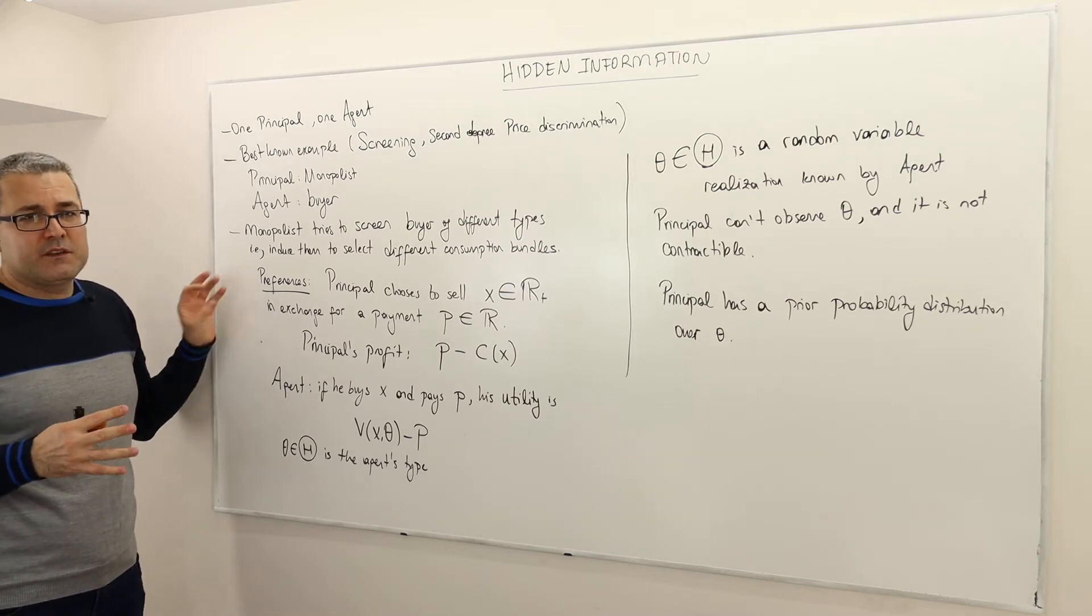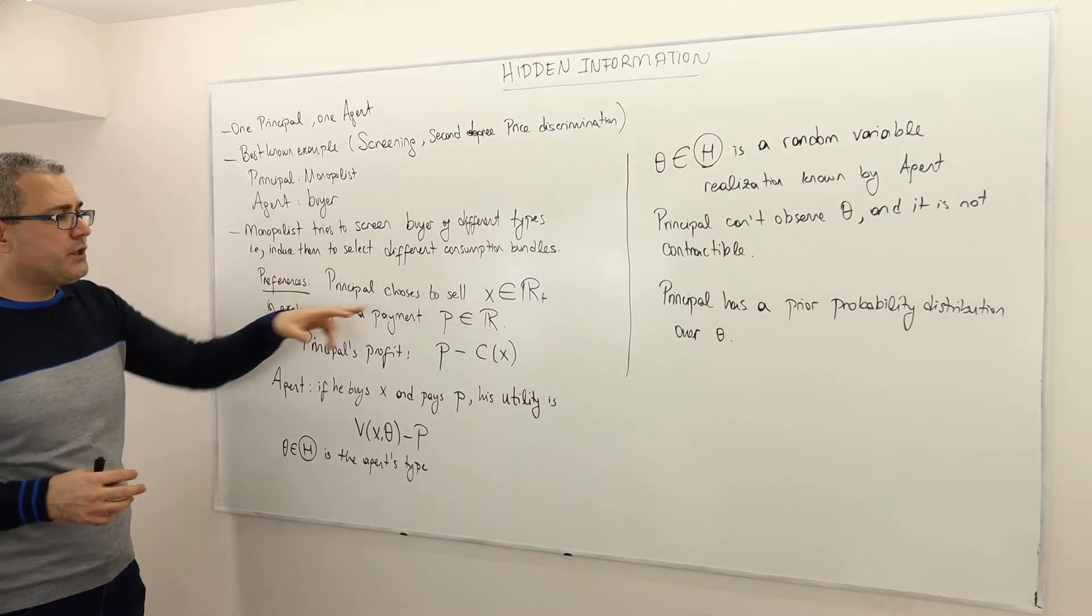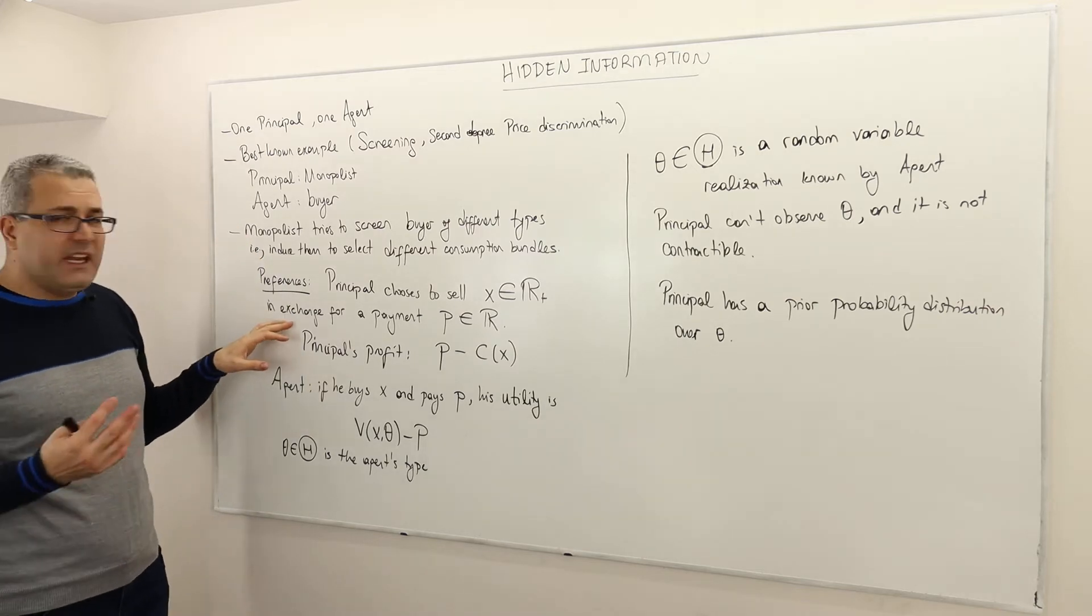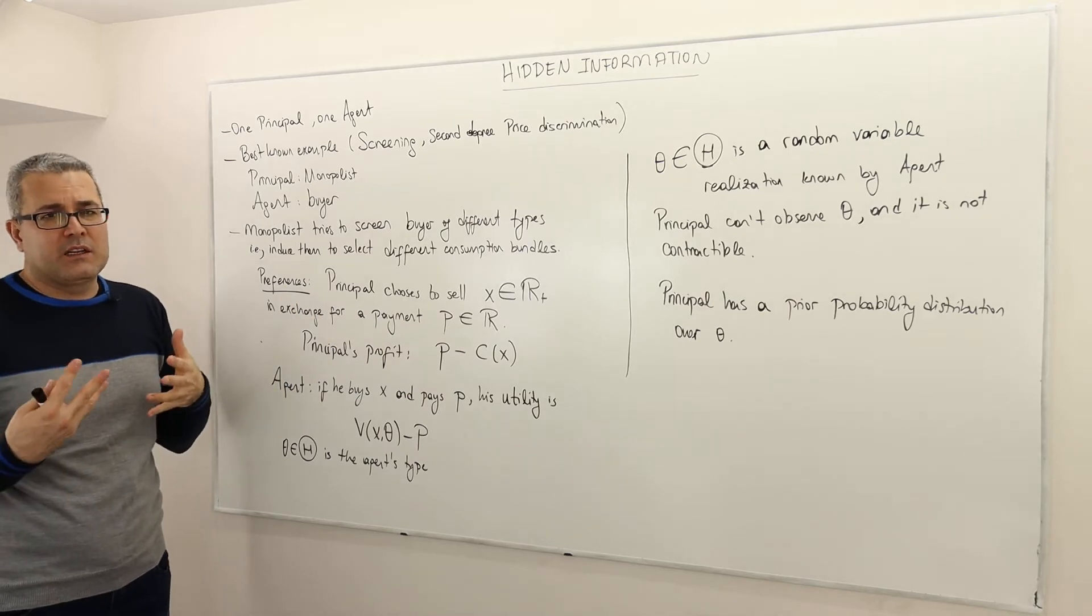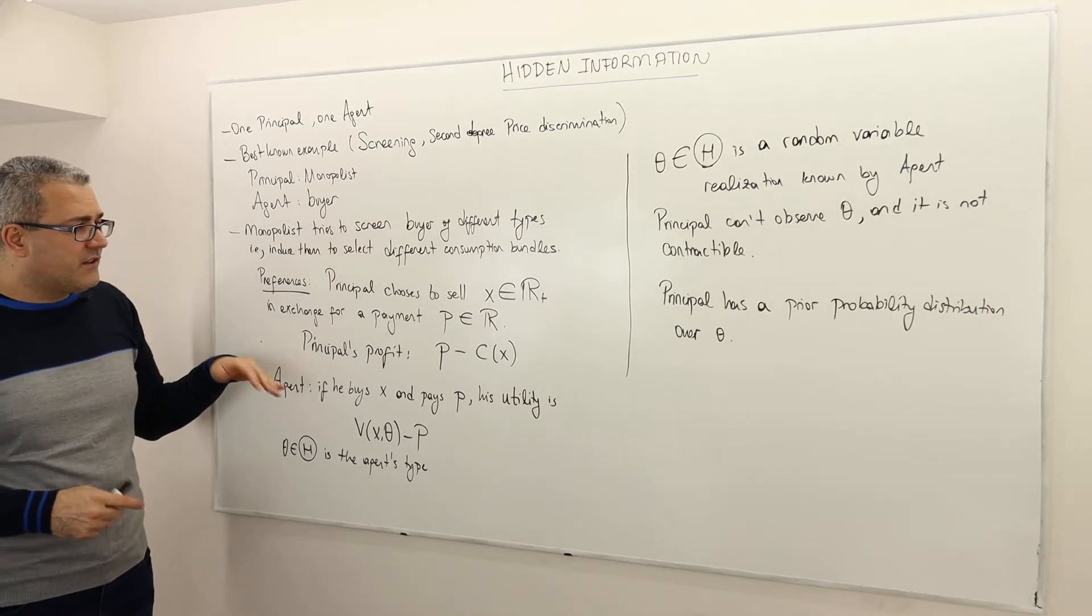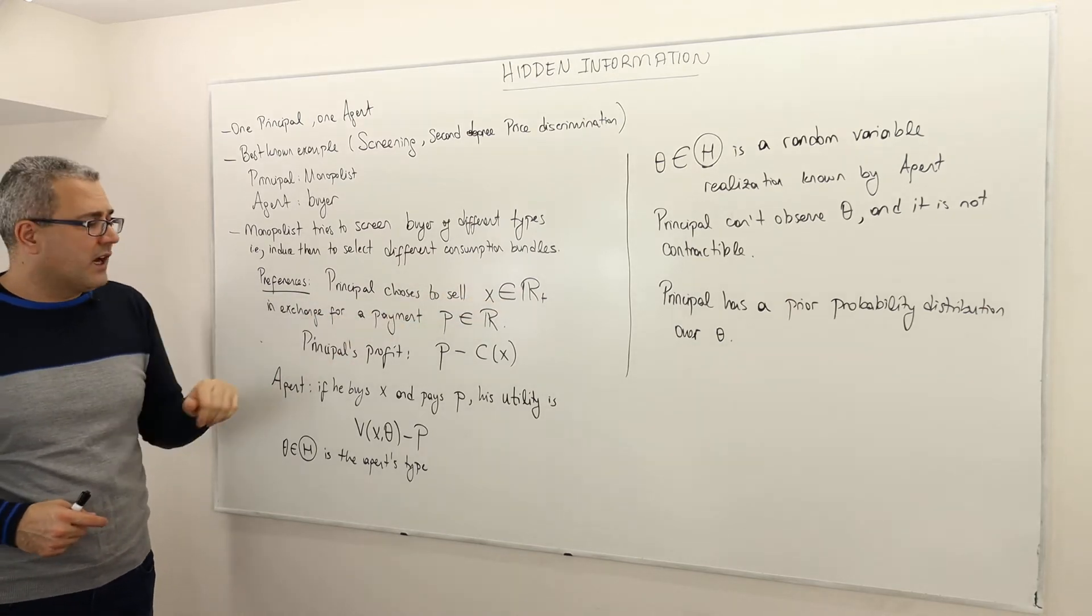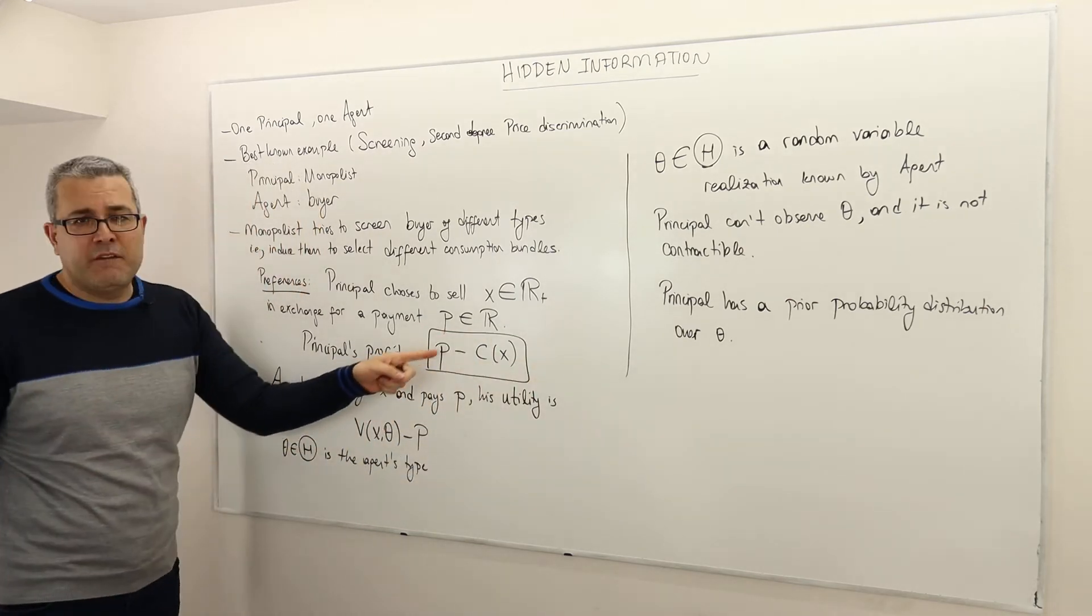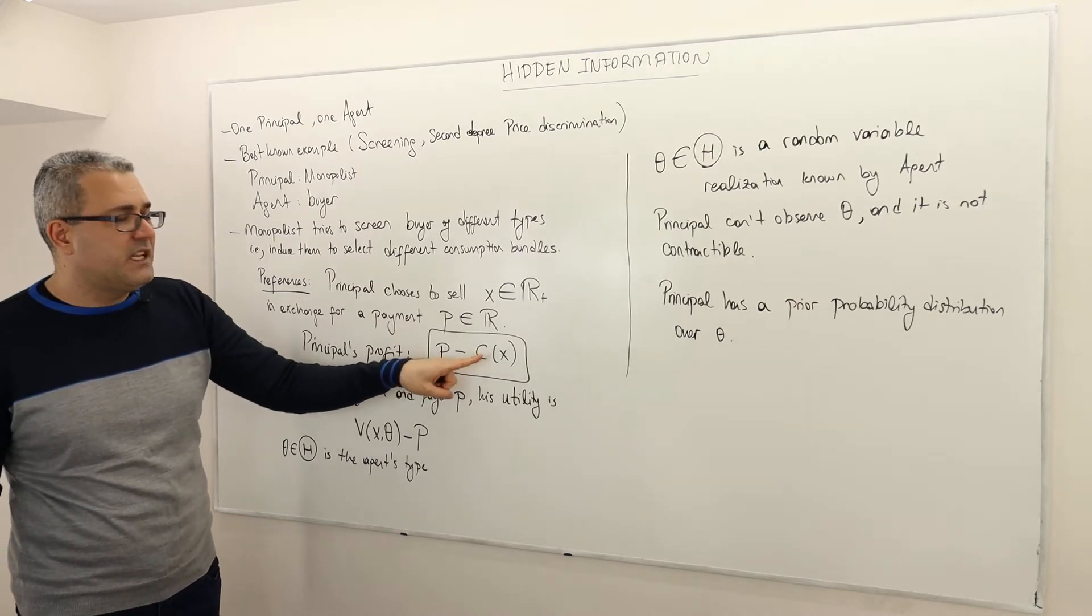What are the preferences? What are the incentives of these players? We assume that the principal chooses to sell some X amount of product in exchange for a payment P. So you pay me P dollars, I'm going to sell you X units of product. In this case, meaning if monopolists sell X in exchange for P dollars, the principal's profit we assume is simple: revenue minus cost. So P minus C times X.